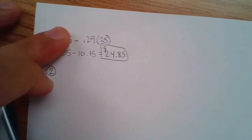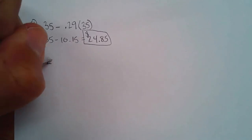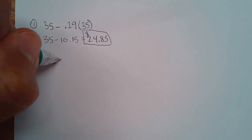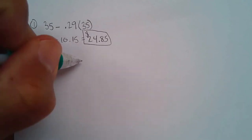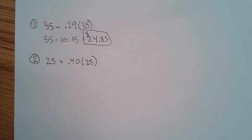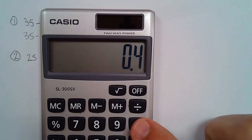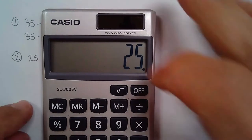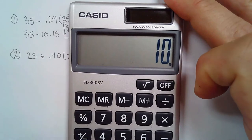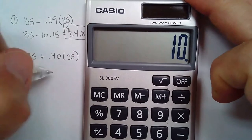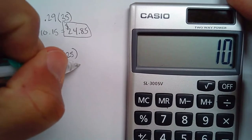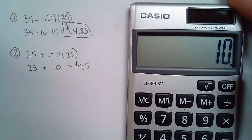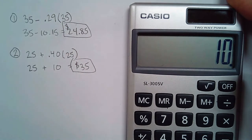So we have $25, and instead of subtracting, we're now going to add 40%, which is 0.40 as a decimal — 40% of $25. So I multiply 0.4 times 25, which equals $10. And so it's $10 plus $25, which is $35.